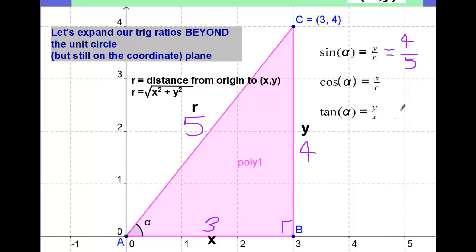The x is 3. Cosine of the angle is x over r, adjacent over hypotenuse. It's going to be 3 over 5. And finally, the tangent is y over x. So that's going to be 4 over 3. So we just found the sine, cosine, and tangent of this angle alpha formed by the point (3, 4).